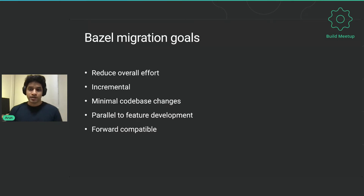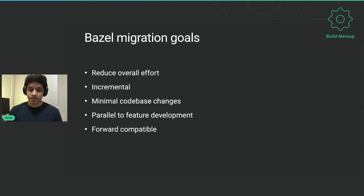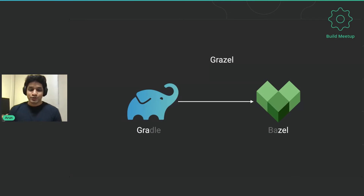We wanted this migration to be non-blocking, considering our very frequent releases — we wanted migration to happen in parallel to feature development. It also needs to be forward compatible: it's not only about migrating and achieving 100% Bazel builds, but how do we maintain it and make Bazel the main build system going forward? So to solve all these challenges, we built a tool called Grazel.